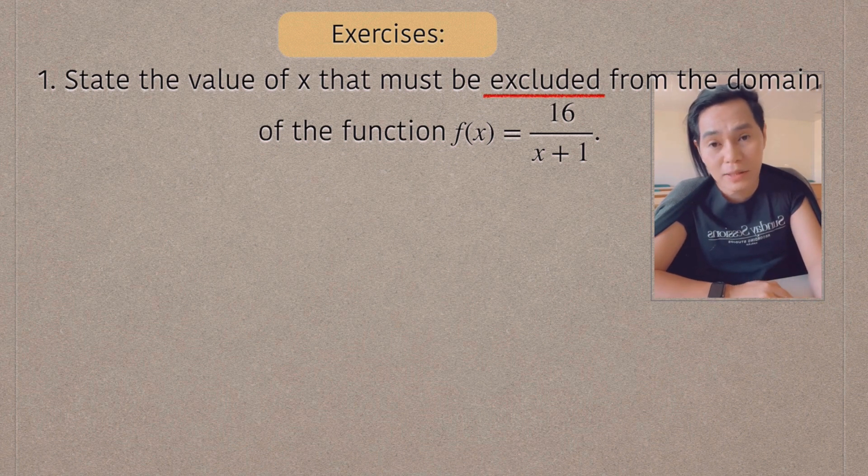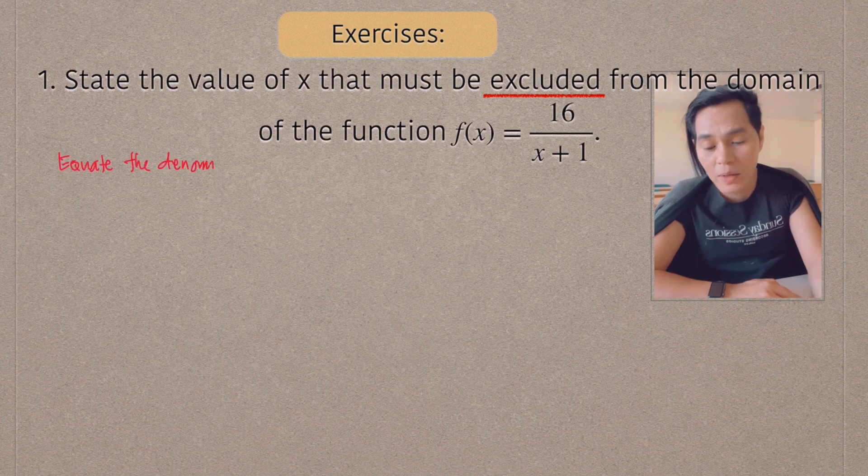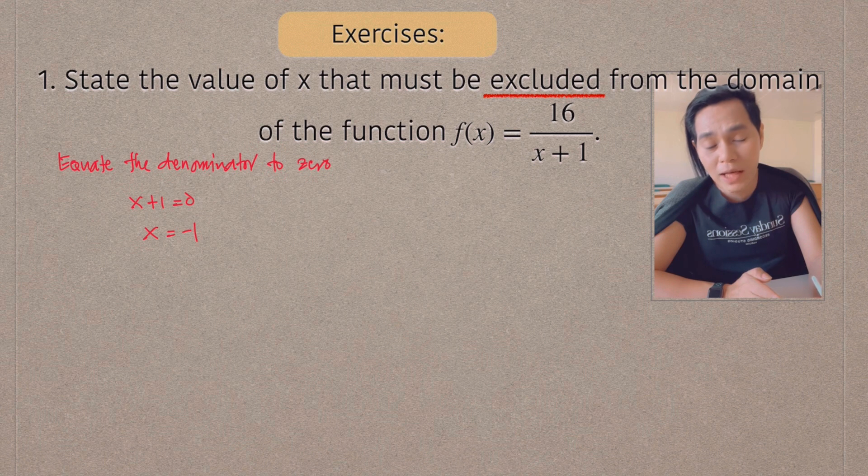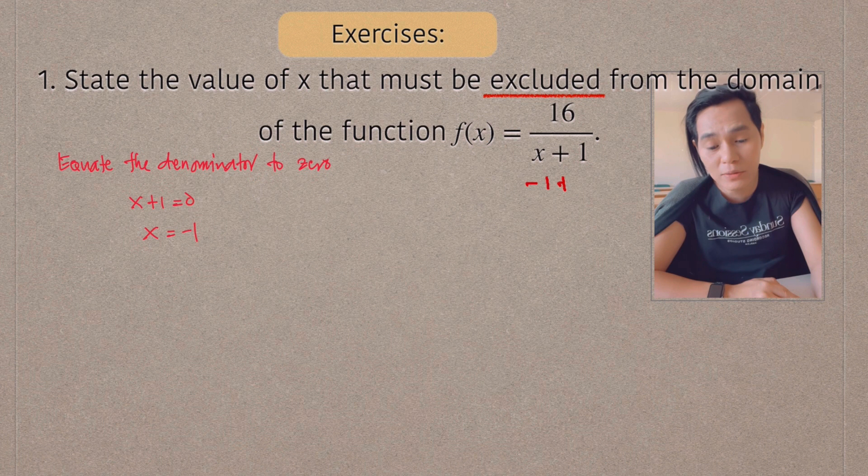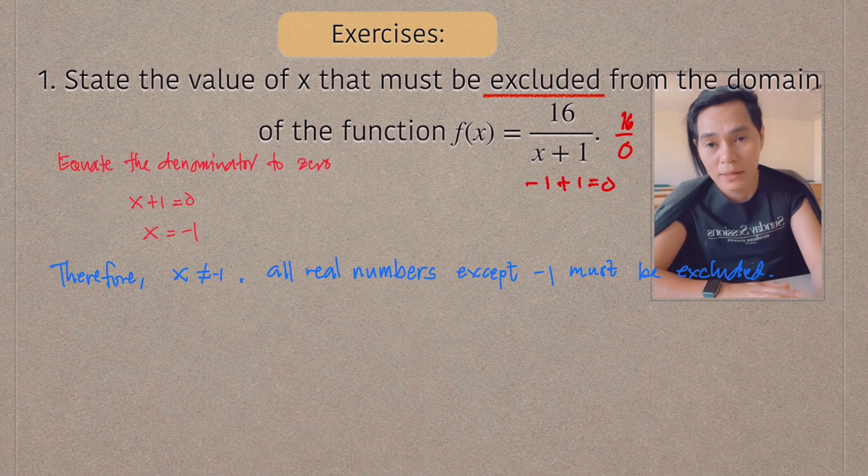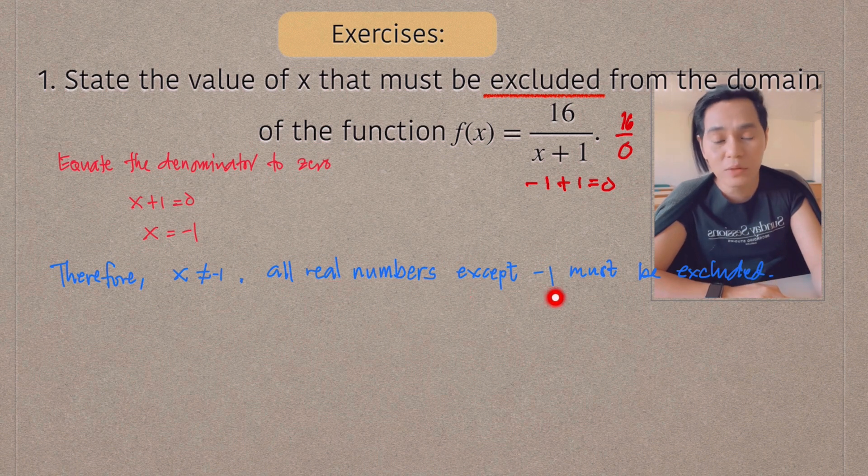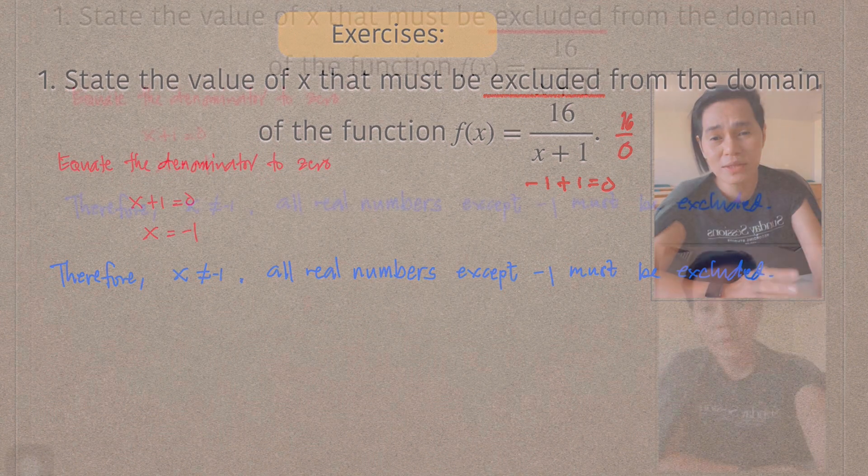In order to do this, look at the denominator. We need to just equate the denominator to 0. And through equating it to 0, we can figure out what number we can add to 1 to make it equal to 0. So there you go. The value of x is equal to negative 1. And then you would say, therefore, x should not be equal to negative 1. Because that should be excluded. And you would say, all real numbers except negative 1 must be excluded from the given function. So that's how you do that.